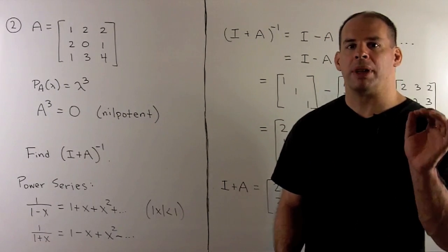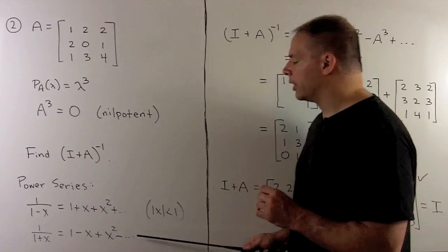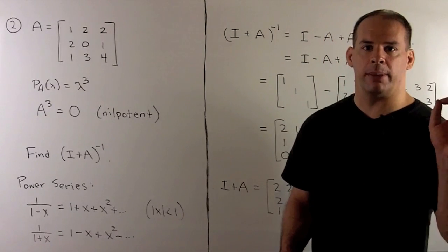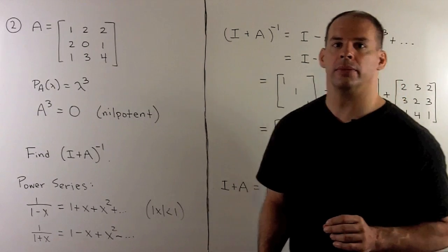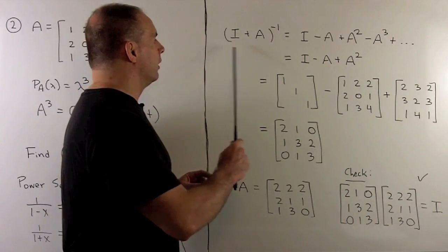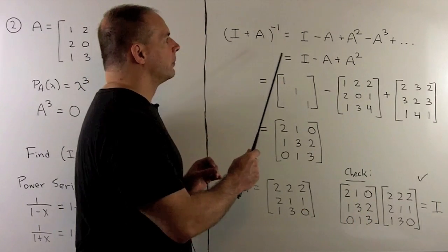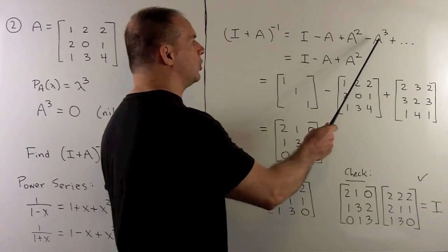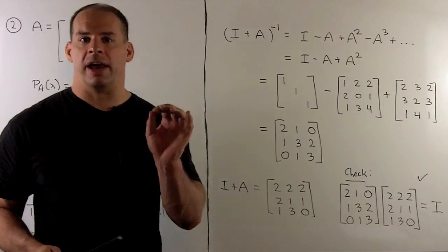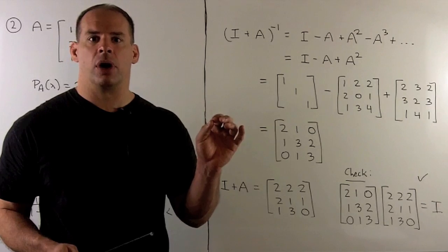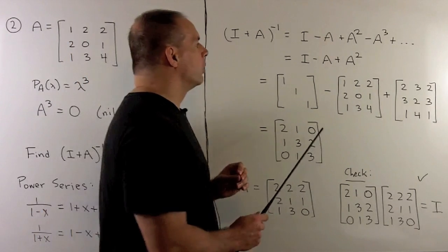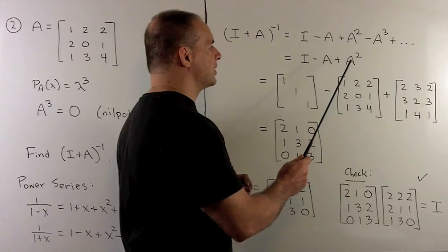We'll apply this formula. I'm going to replace x with the matrix A, and we'll see if we can make sense of that. If we put A in for x, we have our series, and we know, because A cubed equals zero, that A to the 4th is zero, A to the 5th is zero, and so on. So the only terms that will survive will be I minus A plus A squared.